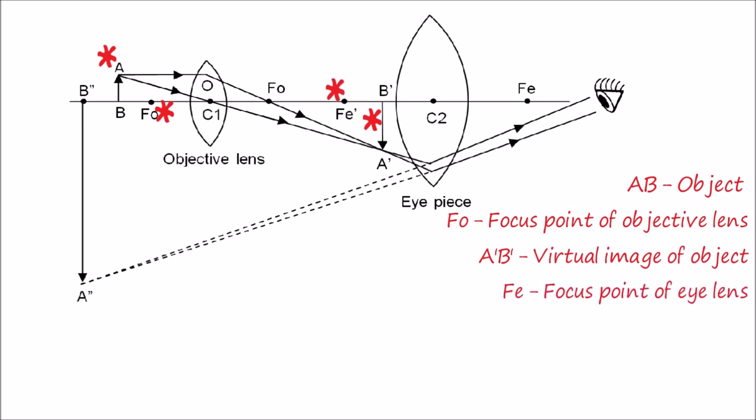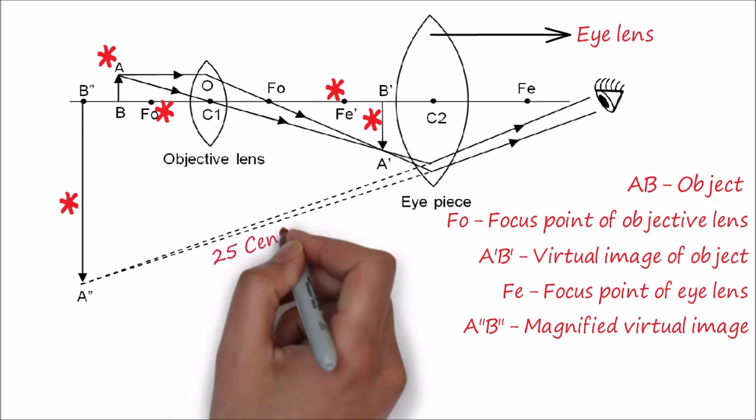This magnified and inverted virtual image becomes an object for the eyepiece. The focus of the object A1B1 is adjusted by the eyepiece, which then forms a magnified virtual image A2B2 at the least distance of distinct vision, which is 25 centimeters for a normal human eye.